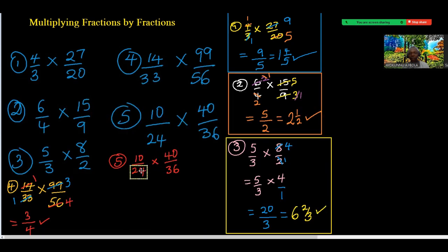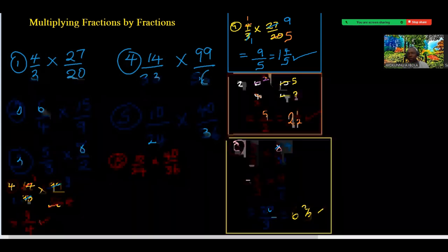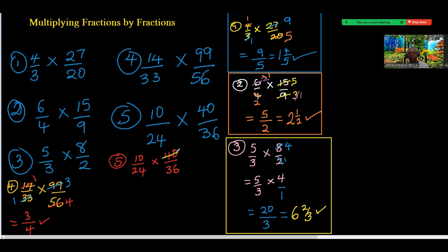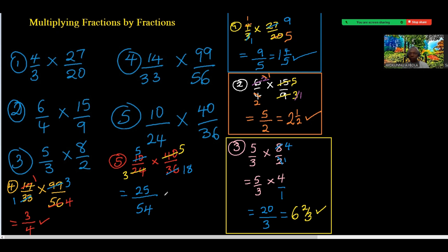Five. And 8 can also divide 24, giving 3. So 8 into 40 is 5 and 8 into 24 is 3. Then between 10 and 36, use 2: 2 into 10 is 5, 2 into 36 is 18. No more common factors. At the top: 5 times 5 is 25. At the bottom: 3 times 18 is 54. Nothing is common to 25 and 54, so the answer is 25 over 54.